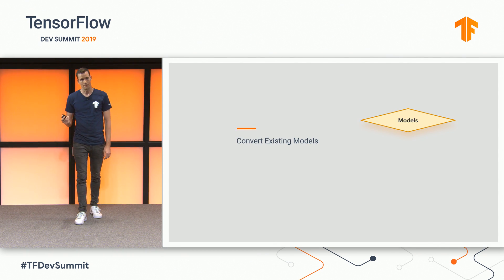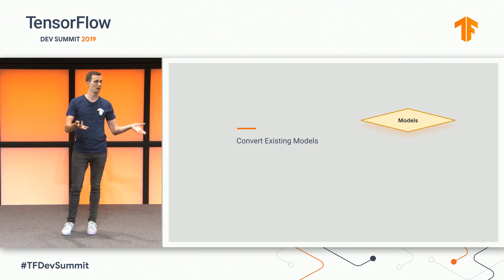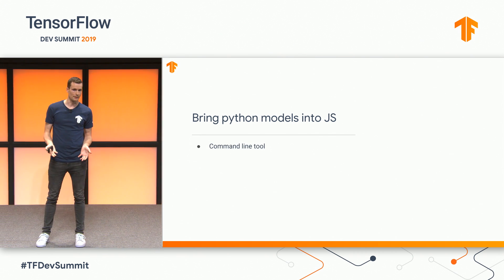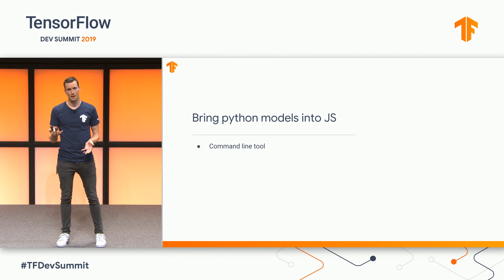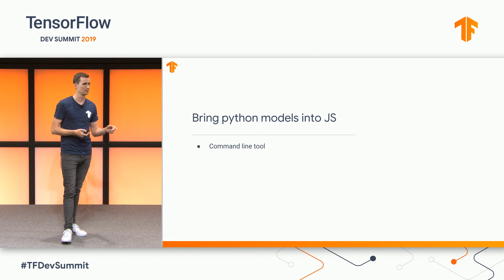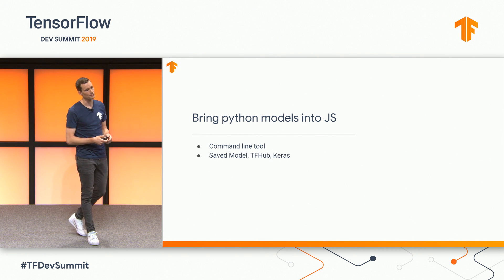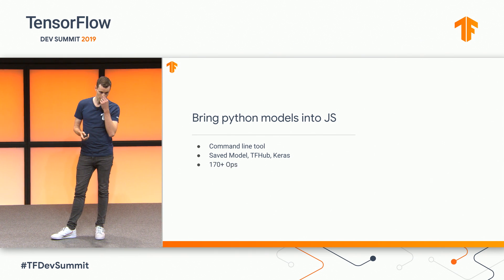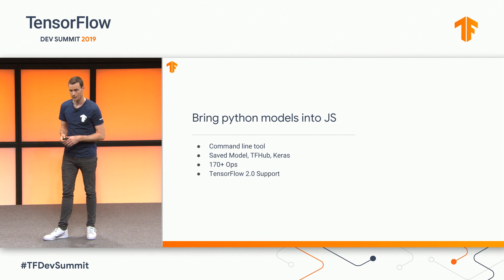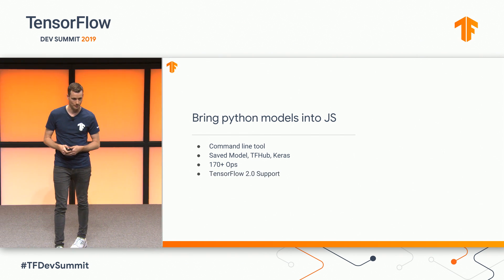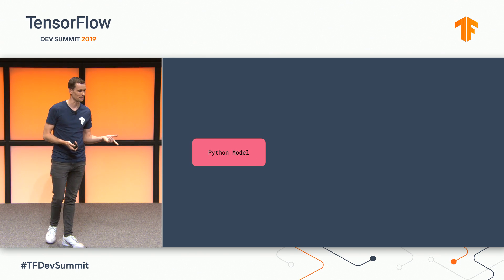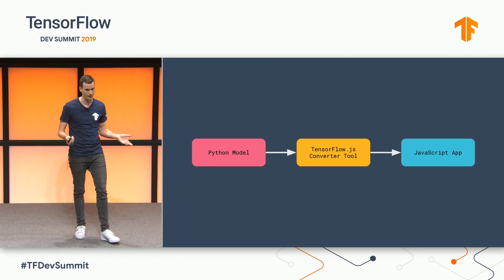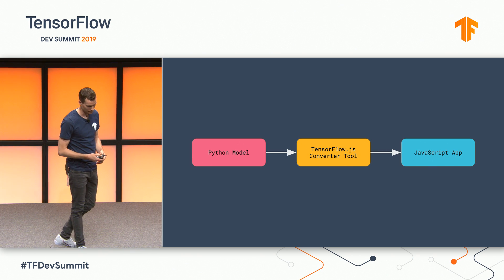We also have the ability to take pre-trained Python models and run them directly in browsers. If you have a pre-trained model already trained in the Python world, we have a command-line tool that makes it really easy to serialize the model as a JSON object with the weights and distribute them in a web format. We support SavedModel, TFHub, and Keras models. The converter currently supports over 170 ops and counting, and we will be TensorFlow 2.0 compatible. So I have a Python model, I run it through the command-line tool, and then I can easily load that in my JavaScript application.